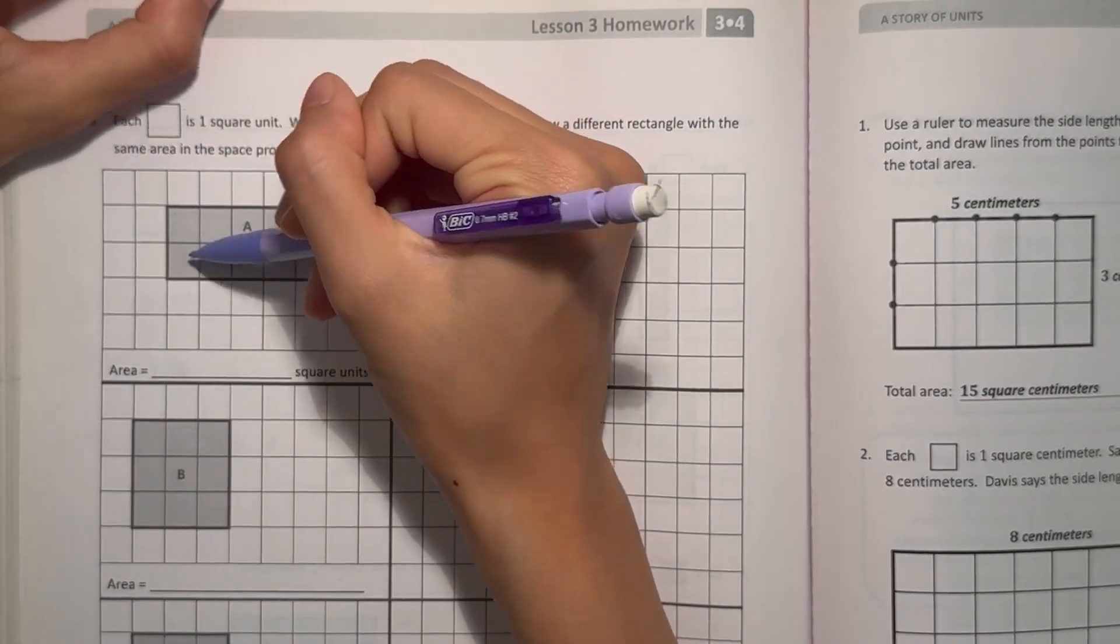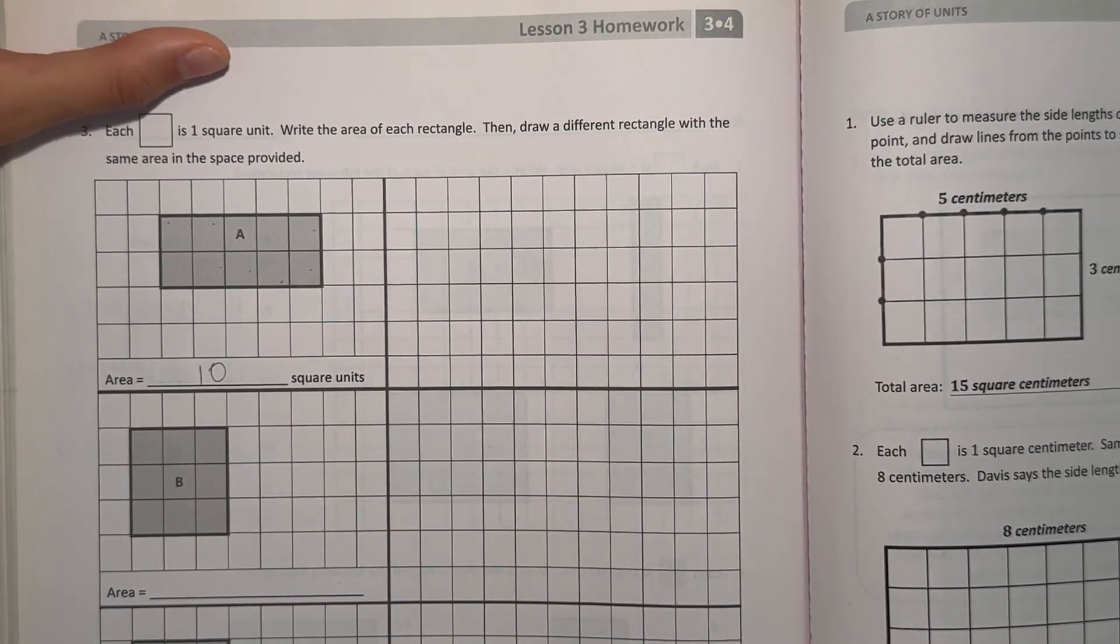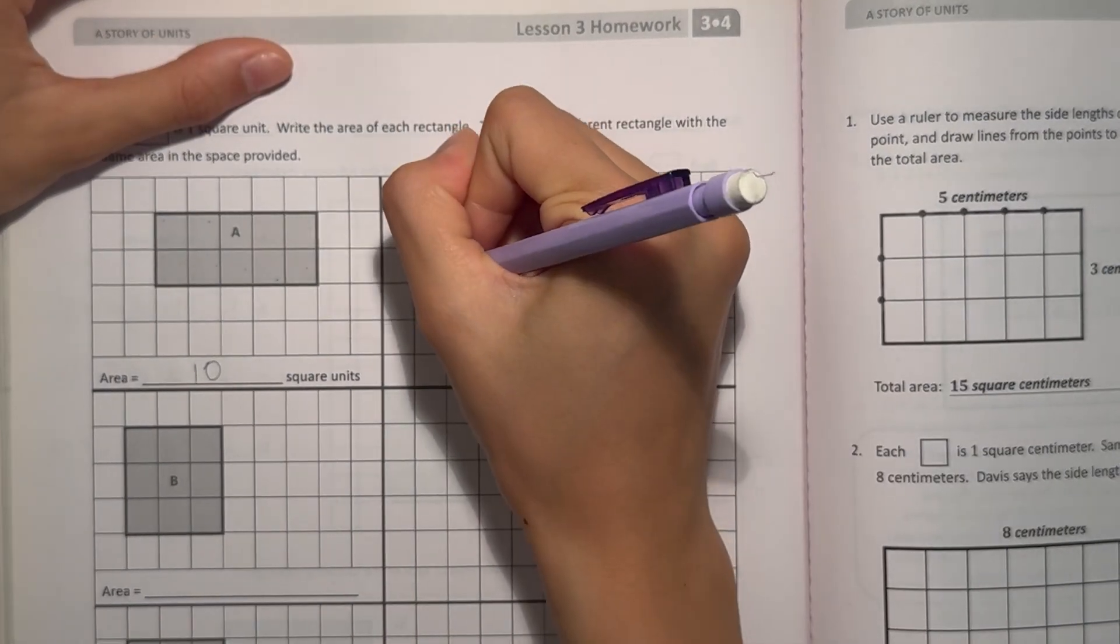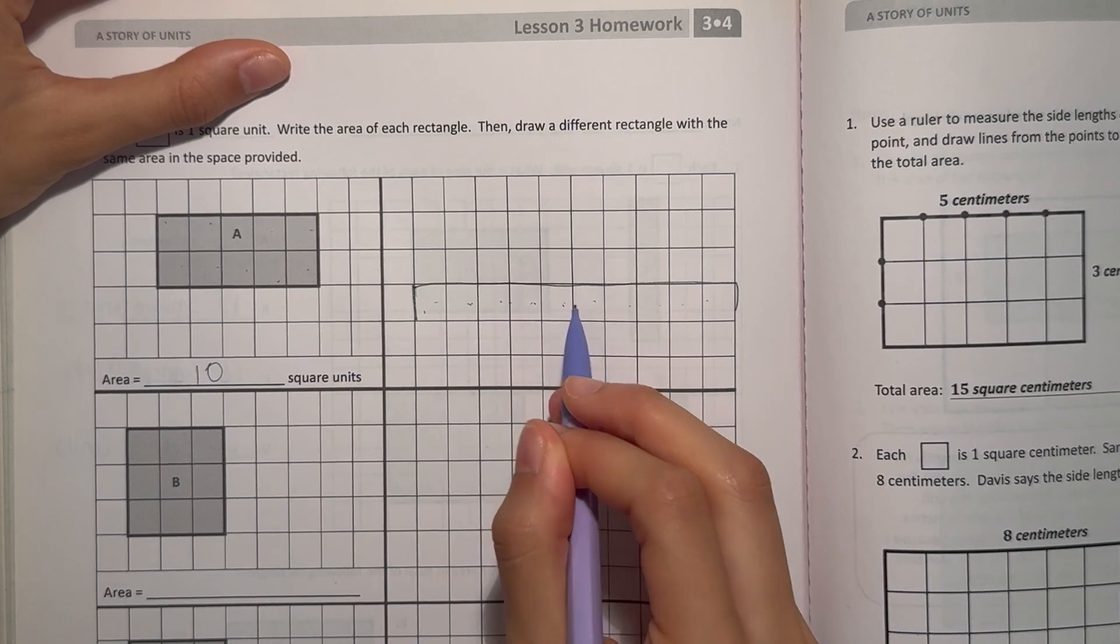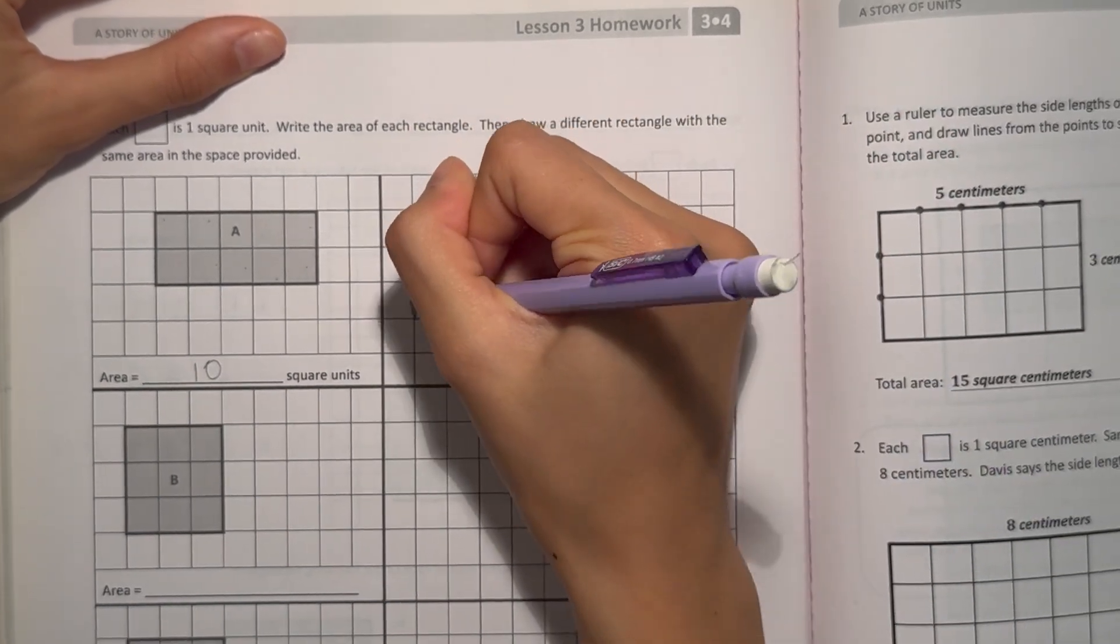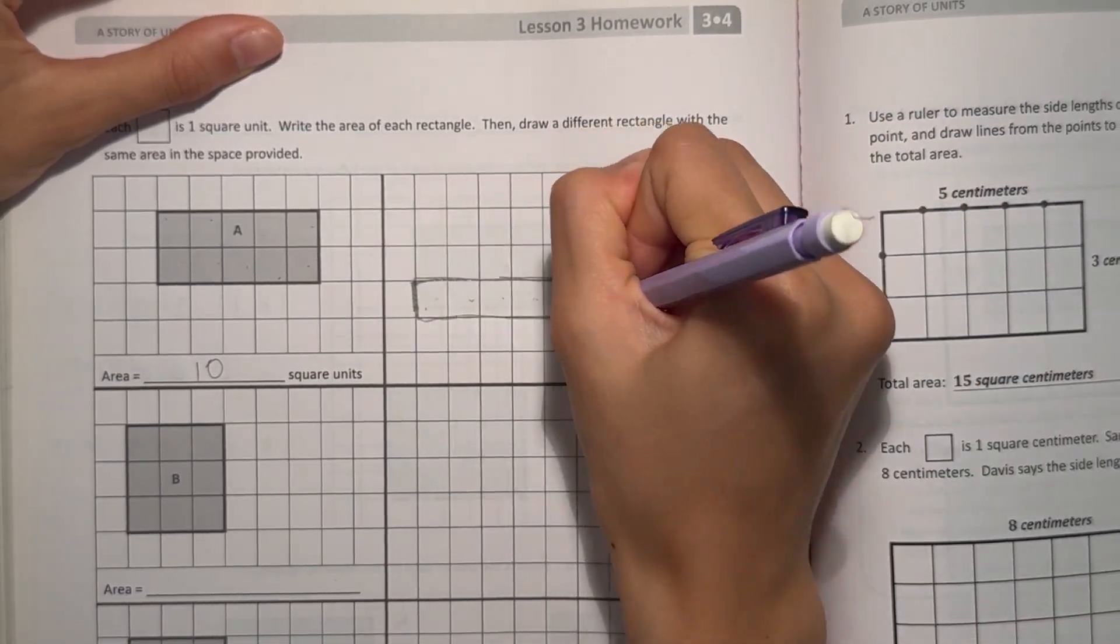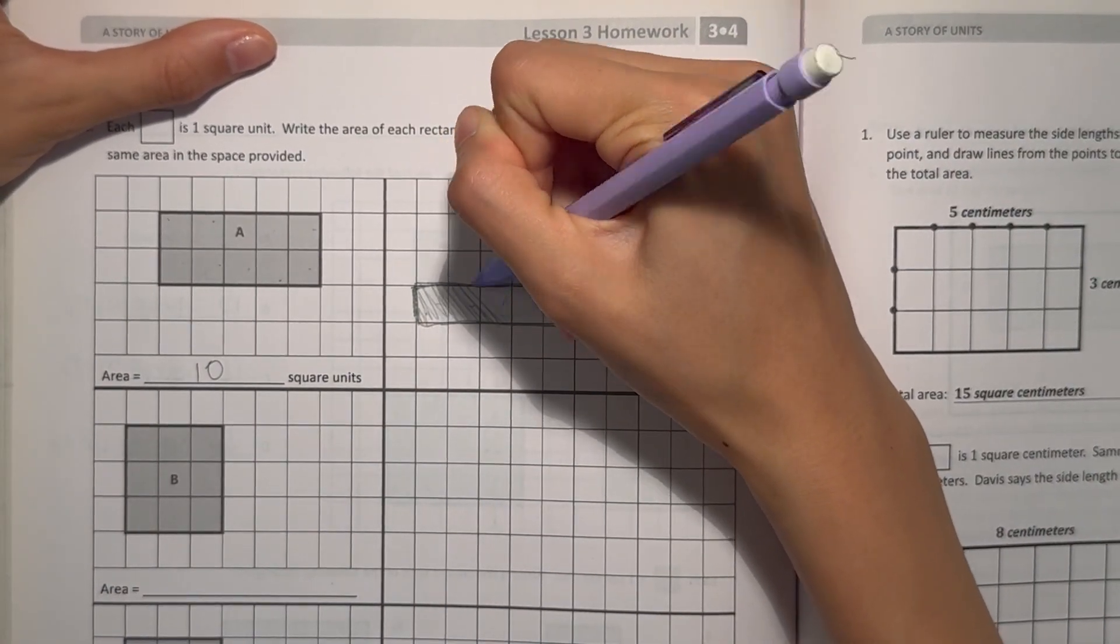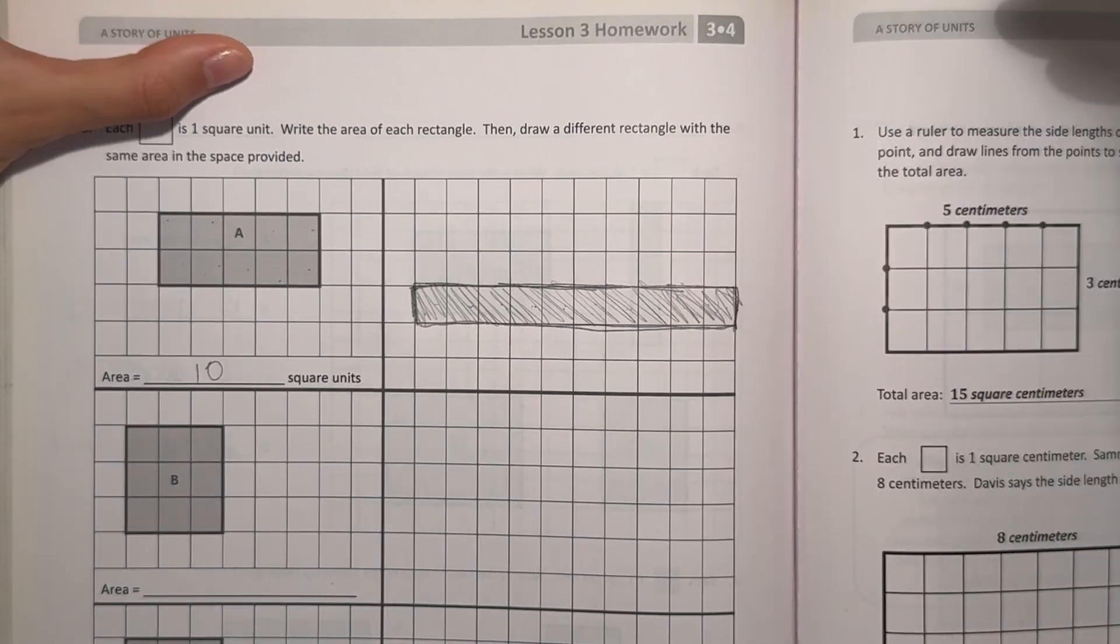So A, 1, 2, 3, 4, 5, 6, 7, 8, 9, 10. Our area is 10. So let's draw another one. We can just do 1, 2, 3, 4, 5, 6, 7, 8, 9, 10. We can draw a rectangle here. Yeah, that is 10. So this can be a rectangle. This also has an area of 10. So this one could work. Alright, and to make it more visible, we can shade it in.